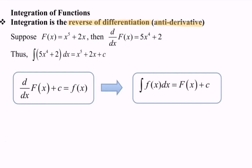Suppose the capital F(x) is x to the power 5 plus 2x. Then if we differentiate capital F(x) with respect to x, we will obtain 5 multiplied with x to the power 4 plus 2. Thus, if we integrate 5x to the power 4 plus 2 with respect to x, we will obtain x to the power 5 plus 2x plus c, or you can say capital F(x) plus c.